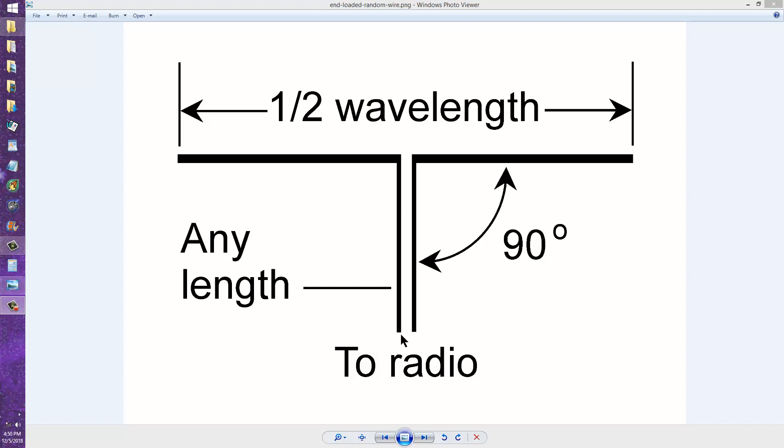In order to get an end-fed random wire out of this, or rather I should say end-loaded random wire, all you do is short-circuit the two conductors at the radio end of the wire. Then you use that as a random wire antenna, that single point.